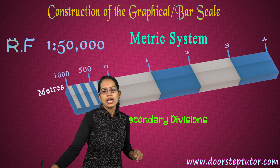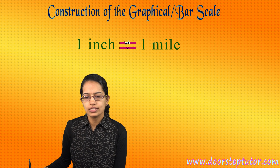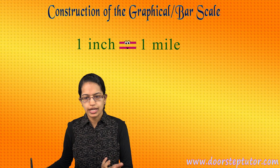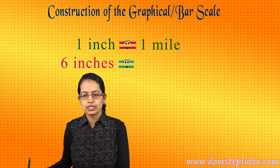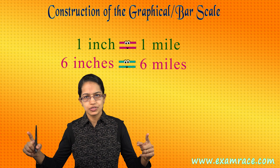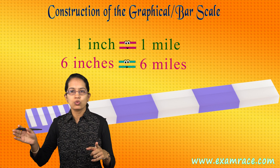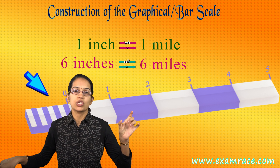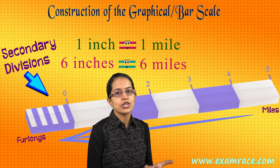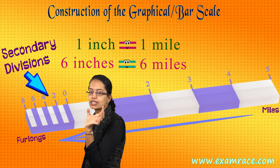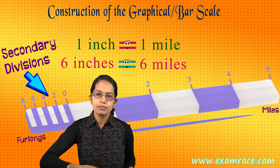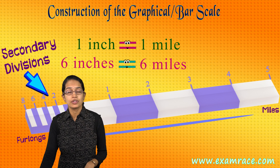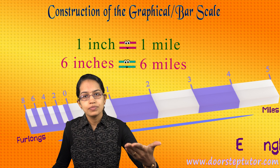For the English system example: 1 inch equals 1 mile. I make it 6 inches equals 6 miles. I draw a line of 6 inches and divide it into 1-inch segments labeled 0 to 5. The first section is broken into 8 equal pieces representing 8 furlongs. That's how you represent a graphical scale in the English system.